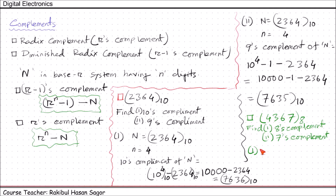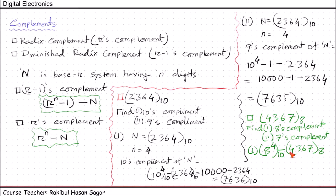To find the 8's complement: the value of big N is 4367 in octal, and the value of small n is 4. The equation is R to the power n minus big N, so 8 to the power 4 minus 4367 in octal. Remember, when calculating 8 to the power 4, you are doing it in the decimal system. So the value 4096 is in decimal, and 4367 is in octal. Be careful — you must convert between systems before performing the subtraction.